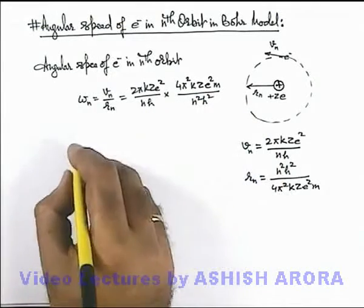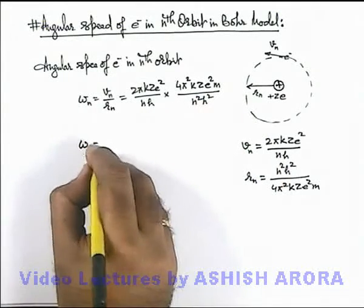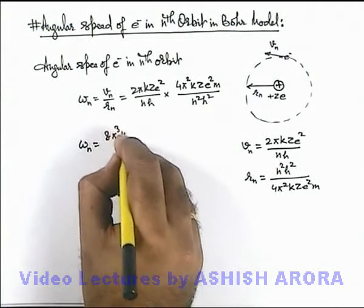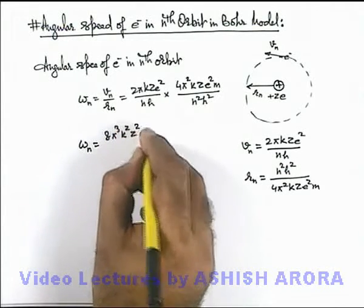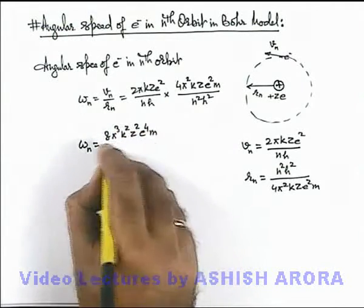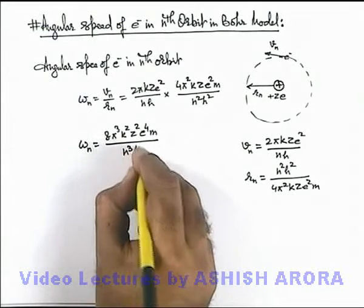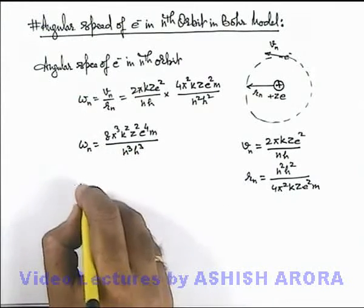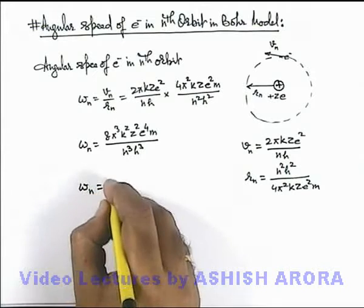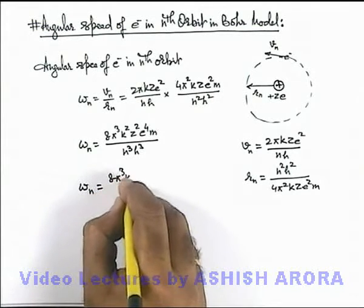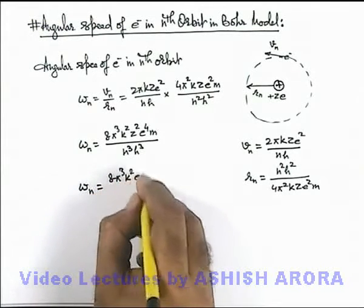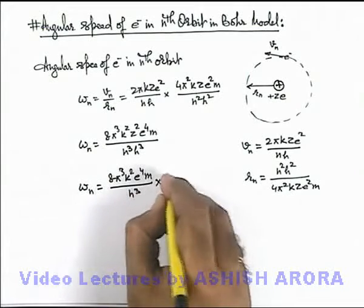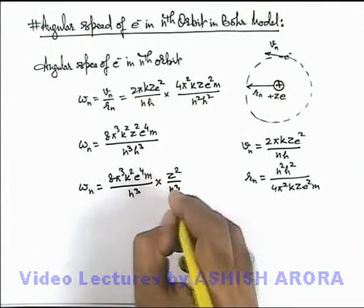On simplifying, we get the value of angular speed as omega_n = 8π³k²Z²e⁴m / (n³h³). We can split this into constant and variable terms: (8π³k²e⁴m / h³) multiplied by (Z² / n³).